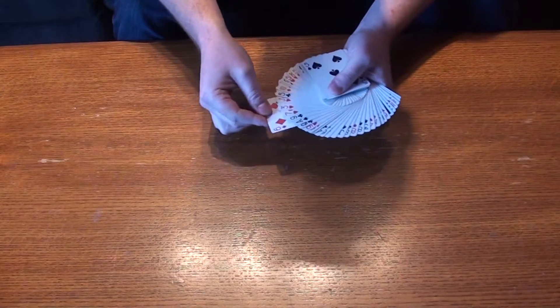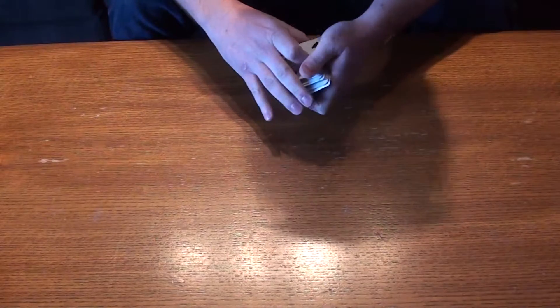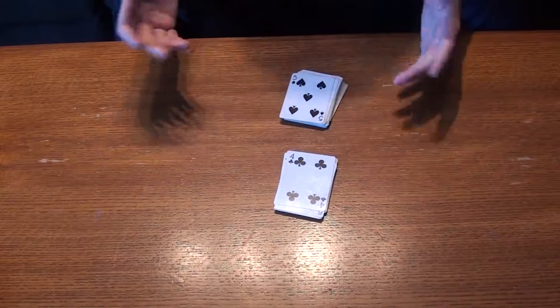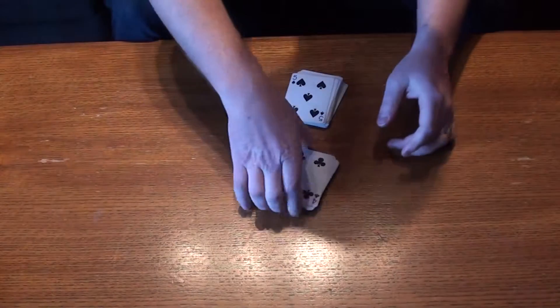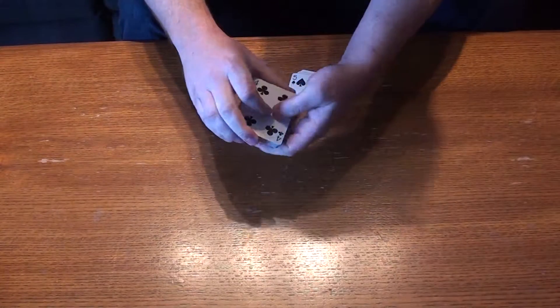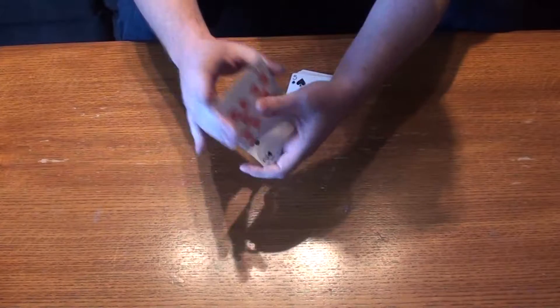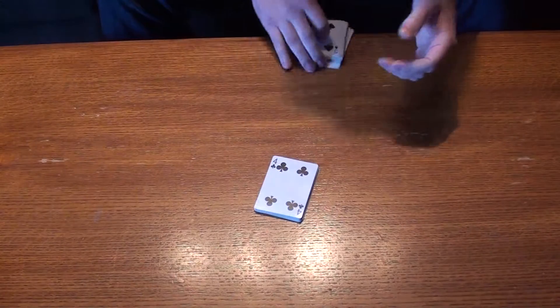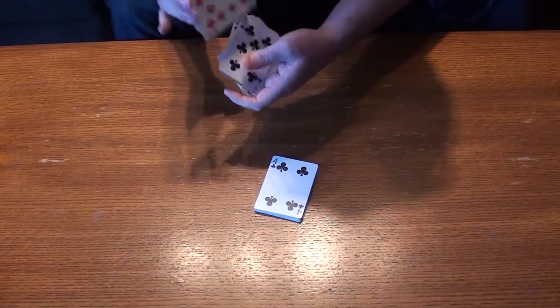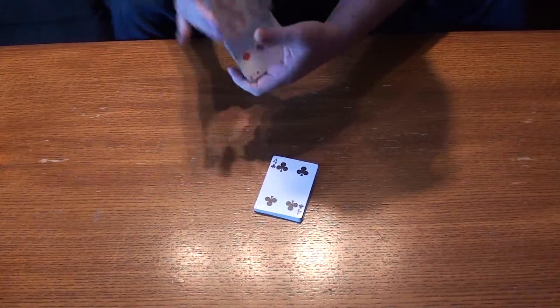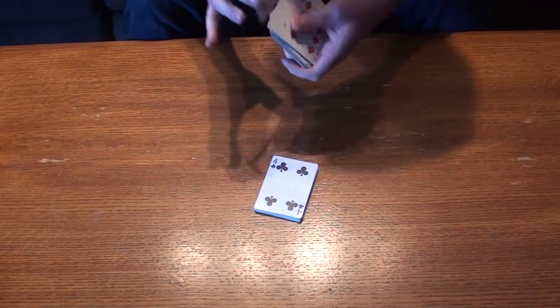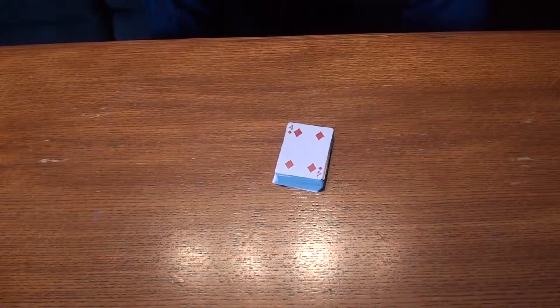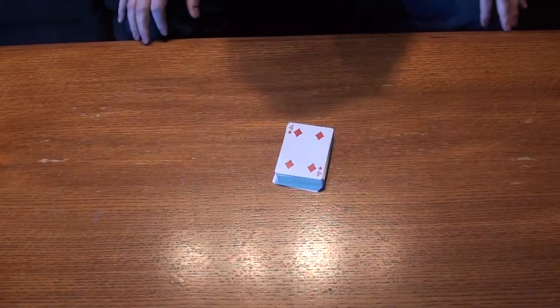At this point we're going to shuffle the deck. The spectator has half the deck and they can shuffle it as much as they want. At the same time that they're shuffling, I'll shuffle my side, and we have a completely shuffled deck with your card somewhere in the deck.